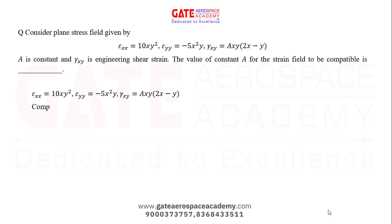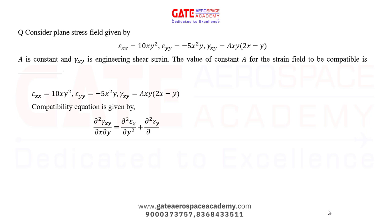The compatibility equation is: ∂²gamma_xy / ∂x∂y = ∂²epsilon_x / ∂y² + ∂²epsilon_y / ∂x². Differentiating gamma_xy with respect to x first: ∂gamma_xy/∂x = A(4xy − y²).